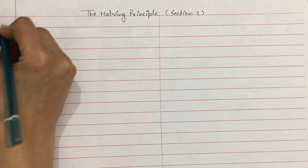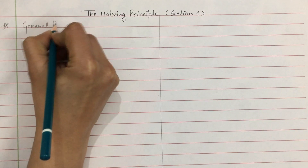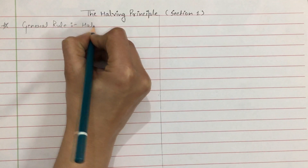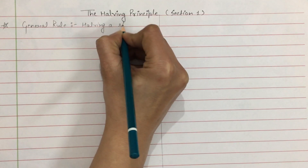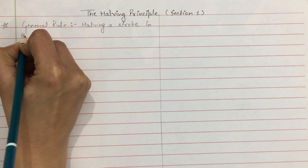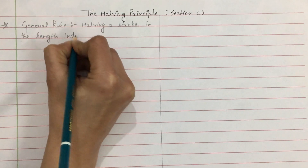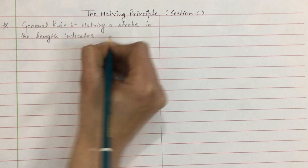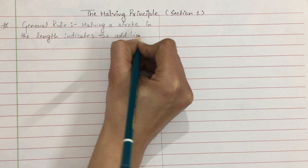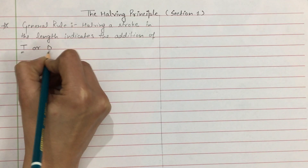General rule: What is halving a stroke? Halving a stroke in the length indicates the addition of T or D.